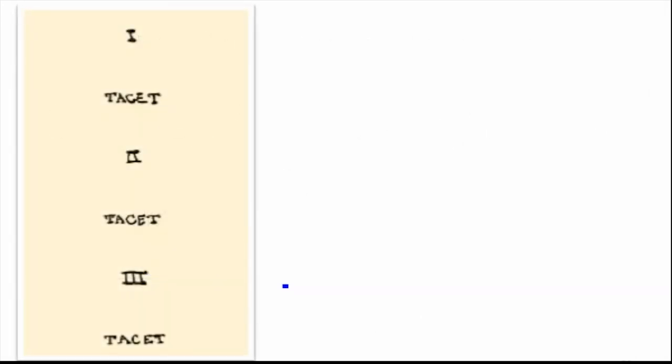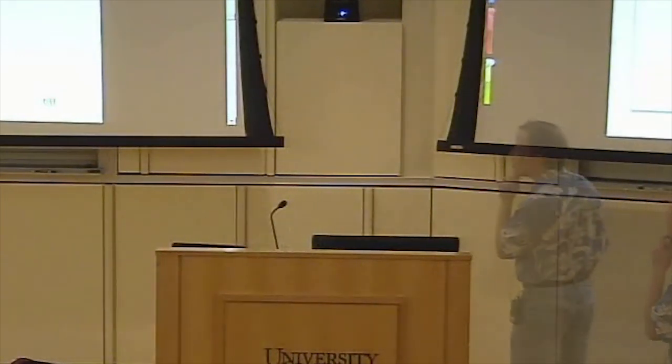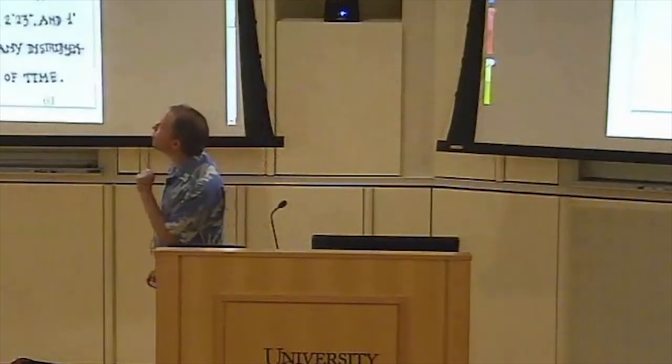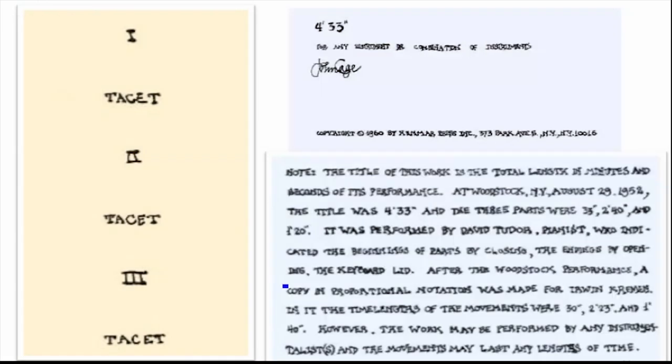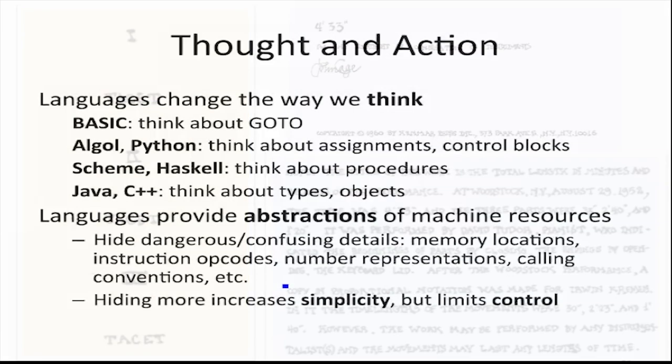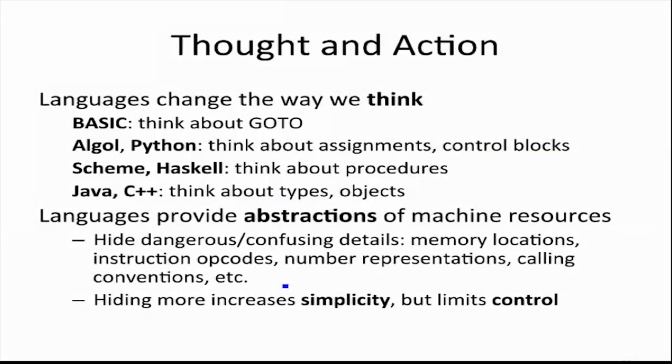Does anyone know this piece? This one's actually pretty easy to play — if we wait long enough, I'm playing it right now. This is John Cage. The performer is supposed to be silent for four minutes and 32 seconds. But there are actually three parts to it and a lot of directions; it's not quite that simple to just be silent. So languages are important because they change the way we think.